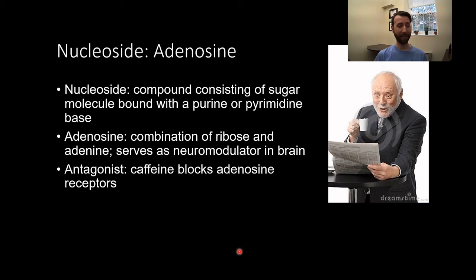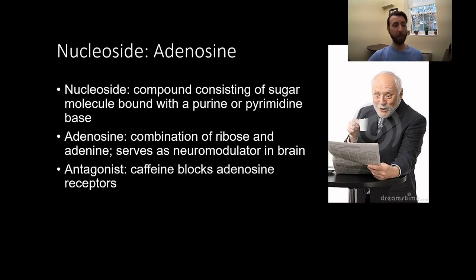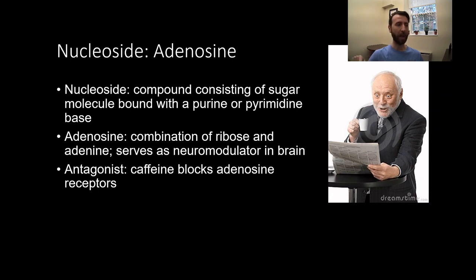A drug that most of us probably use more often — let's talk about caffeine and adenosine. Adenosine is a nucleoside, a compound consisting of a sugar molecule bound with a purine or pyrimidine base. Adenosine is a neuromodulator in our brain that acts a lot like a neurotransmitter. The function people associate most with adenosine is that it makes us feel tired. Adenosine accumulates throughout the day, binds to adenosine receptors, and produces a sleepy, tired feeling. Caffeine is a competitive antagonist of adenosine — it binds to those adenosine receptors but doesn't activate them. It's like a key that fits into a lock but doesn't turn it. Those adenosine receptors can't bind adenosine and you don't feel as tired — caffeine promotes wakefulness.